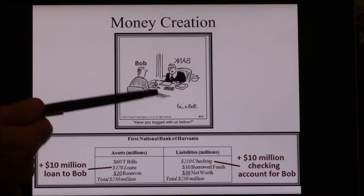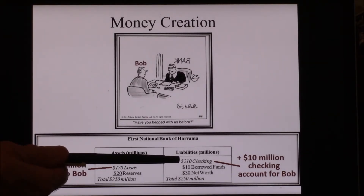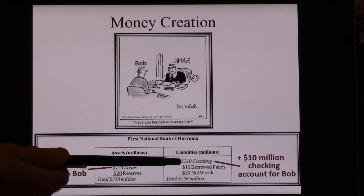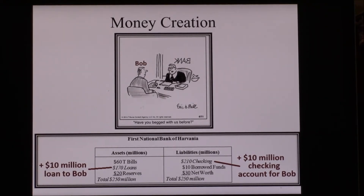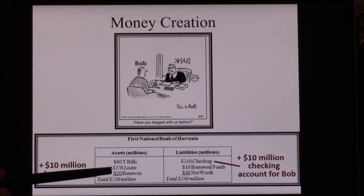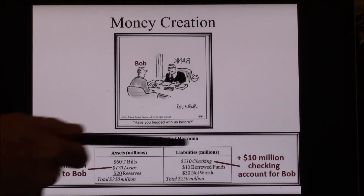Banks are permitted by law to just make up an account on the computer that's worth $10 million and hand you a checkbook and say, 'Bob, here's a $10 million account — have fun, but you better pay us back.' The only legal requirement is that they have to keep 10% of all checking in reserve. So they're going to have to address that problem, but in the meantime they are extending credit.